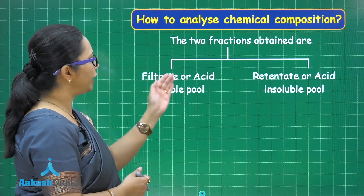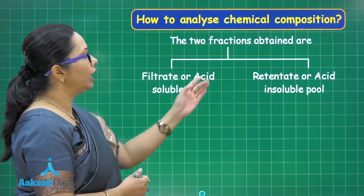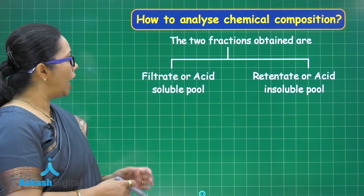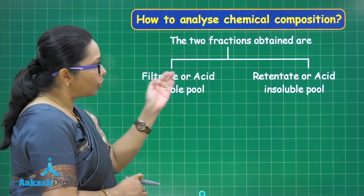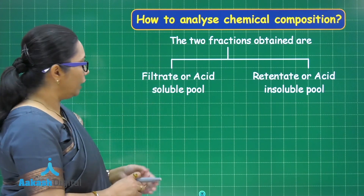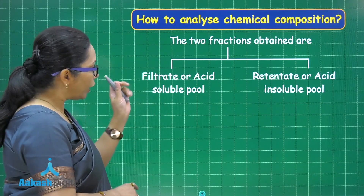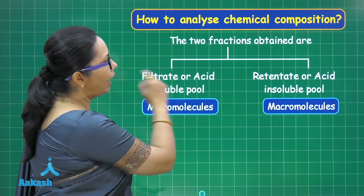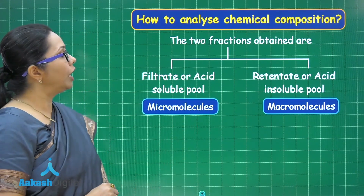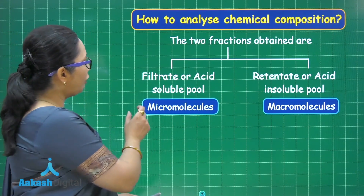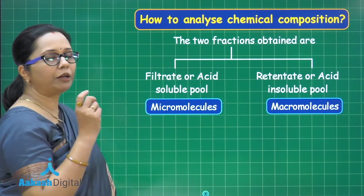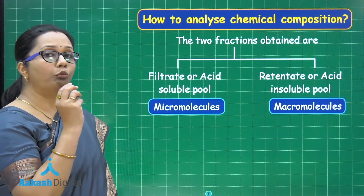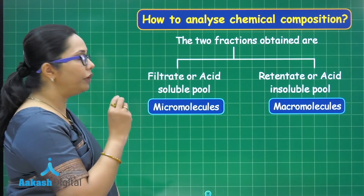These two fractions are termed the filtrate, or the acid soluble pool, and the retentate, or the acid insoluble pool. In the filtrate we will have the micro molecules, and in the retentate we will have the macromolecules.